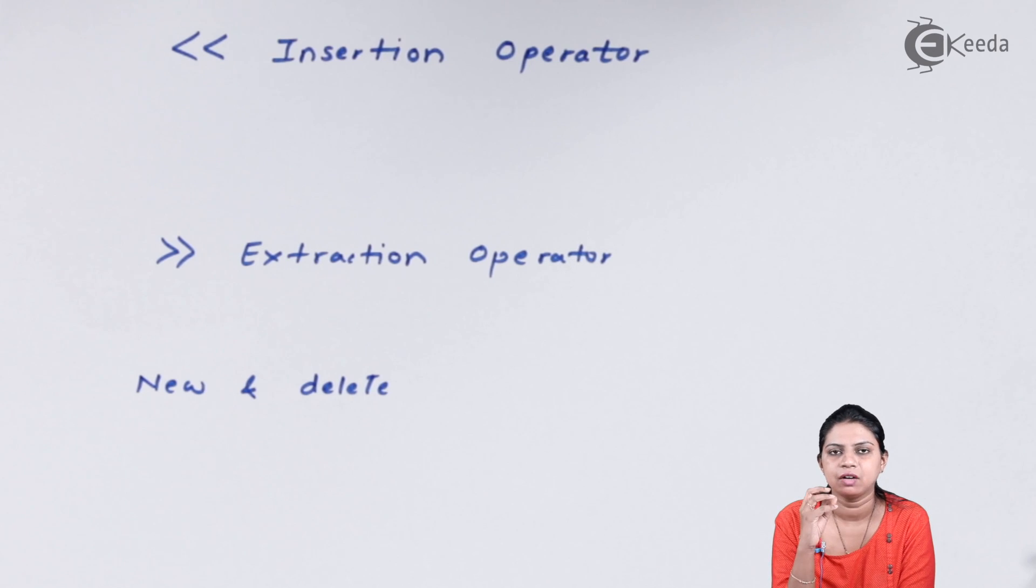Whenever we write a program and need to print something on the computer screen, we use a function called cout. When I use cout, I use an operator called the insertion operator. The insertion operator is basically used to insert content onto the screen of the computer.